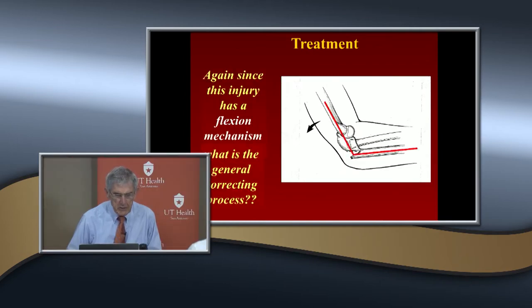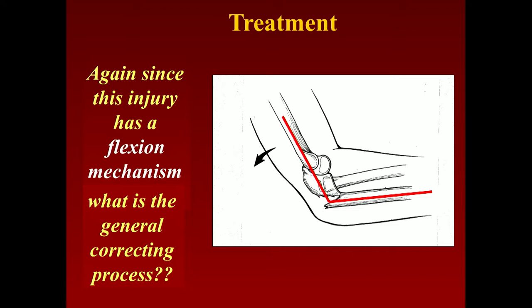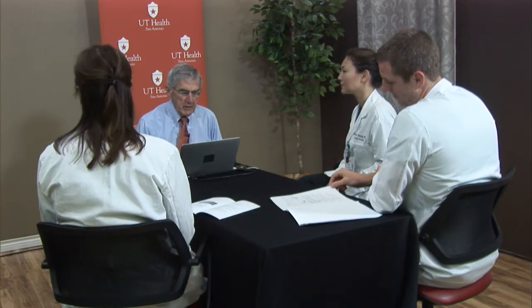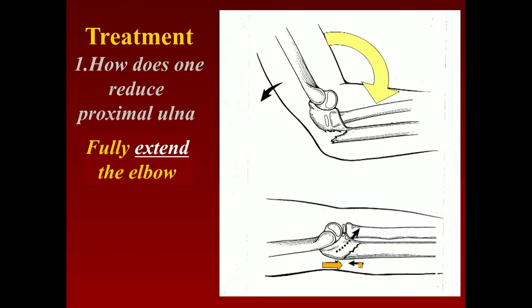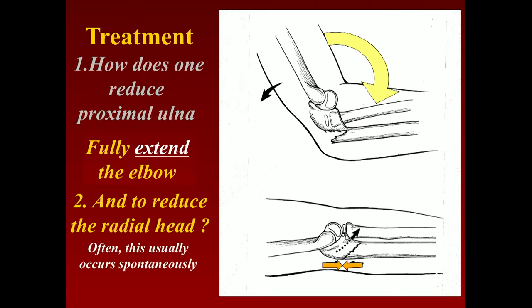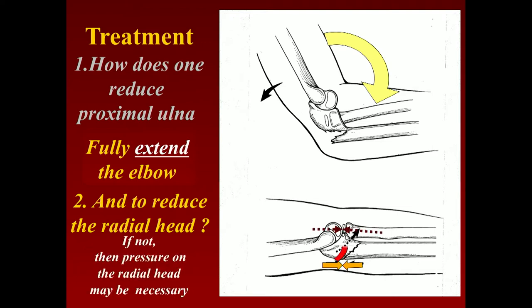Since this has a flexion mechanism, the general correction process is extension — but not just extension. You first extend the elbow to correct the proximal ulna angulation. Once you extend the elbow, that usually corrects the angulation. And usually, once you correct the deformity in the ulna, the radial head will correct spontaneously. If not, you may have to put a little pressure to push it into place.